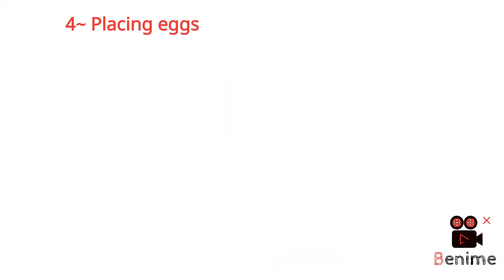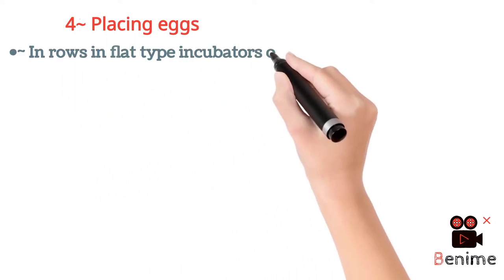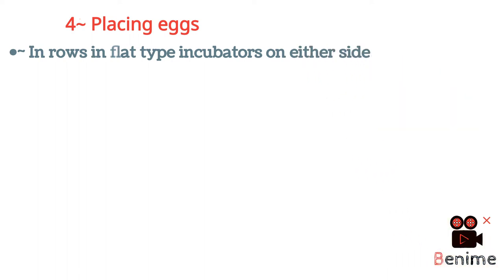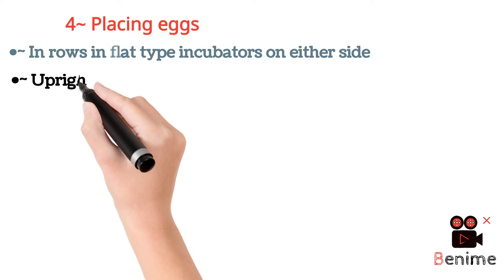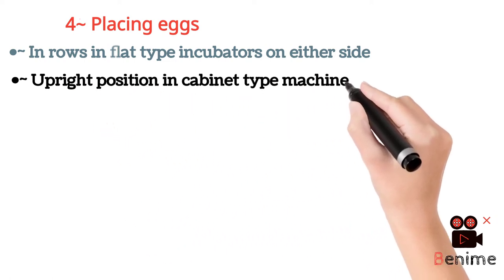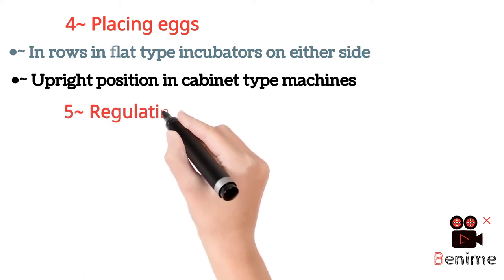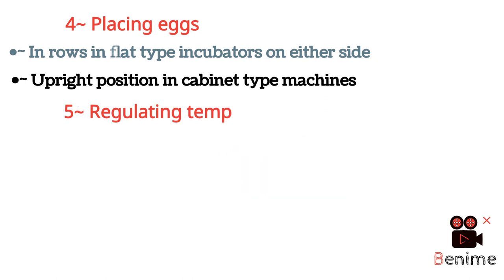The fourth factor is placing or setting the eggs in the incubator. Eggs are placed on their either sides in rows in flat-type incubators, while in upright position in cabinet-type machines. We have already discussed about the upright position and the horizontal positions in the setter and hatcher in our previous lecture.